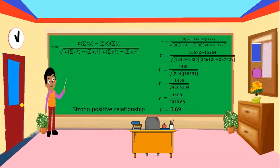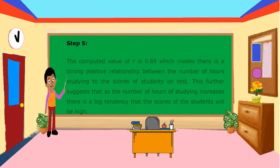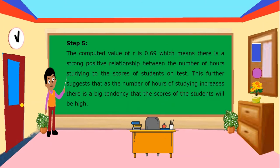The description is strong positive relationship. Step 5 — decision: the computed value of R is 0.69, which means there is a strong positive relationship between the number of hours of studying and the scores of the students on the test. This further suggests that as the number of hours of study increases, there is a big tendency that the scores of the students will be high.